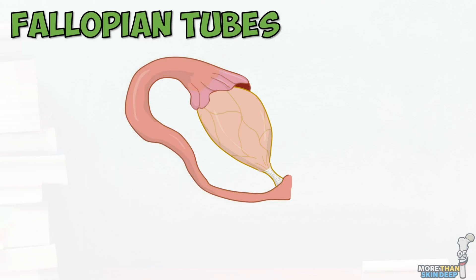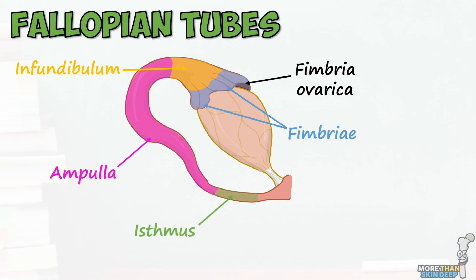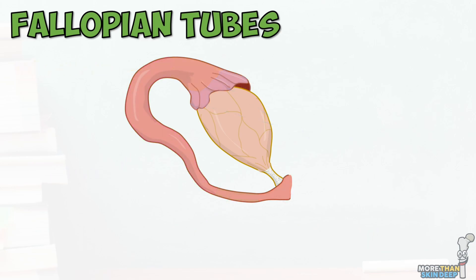At their ovarian end, the fallopian tubes have special finger-like ciliated projections known as fimbriae, which improve their ability to catch the egg as it's released. The longest of these fimbriae is the fimbria ovarica, which connects directly to the superior pole of the ovary. Continuing proximally, we then have the funnel-shaped infundibulum, the ampulla, the isthmus, and finally the uterine part, which opens into the uterine cavity at the ostium. During reproduction, the egg is usually fertilised within the ampulla of the fallopian tubes.